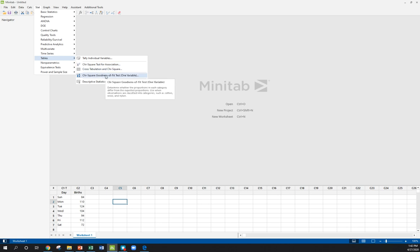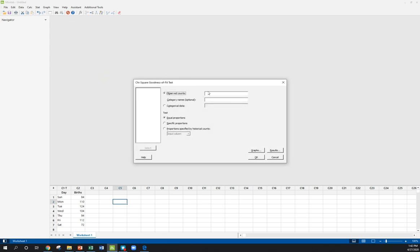We're doing a chi-squared goodness of fit test, just one variable. We don't have the exact data, we don't want to click categorical data, we want to click observed counts. Our observed counts are births and we can tell Minitab the days are there as well.